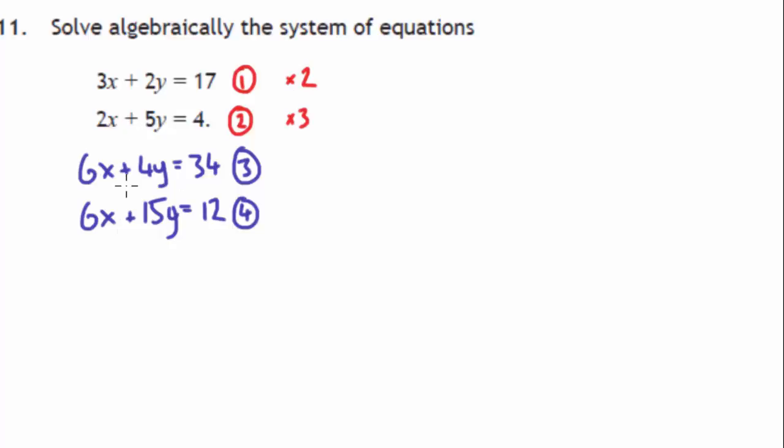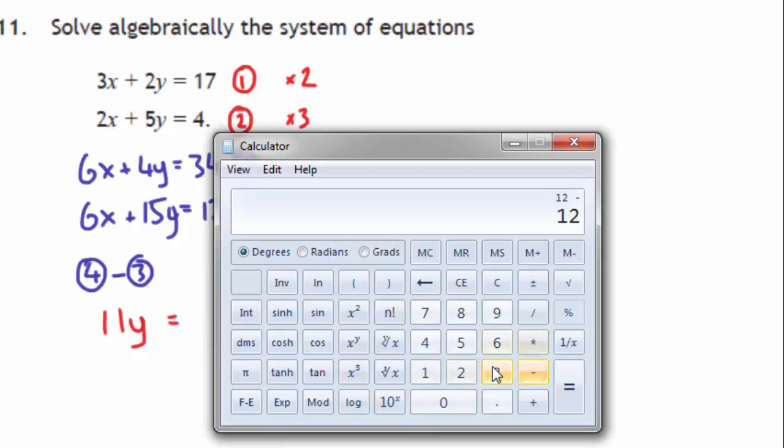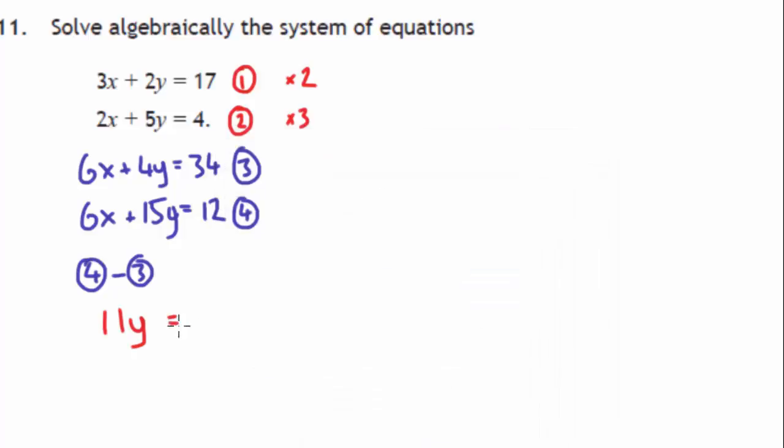Now what we want to do is try and get rid of the x's, so I'm going to actually take equation 4 away from equation 3, or sorry, 3 away from 4. So 6 minus 6 is 0. 15y subtract 11y, that's going to leave us with 11y. So 15y subtract 4y leaves us with 11y. 12y subtract 34, so that's 12 subtract 34. Just to make sure I'm not making any daffy mistakes, that's going to be minus 22. So what we then do is we'll divide both sides by 11. That gives us y equals minus 2.